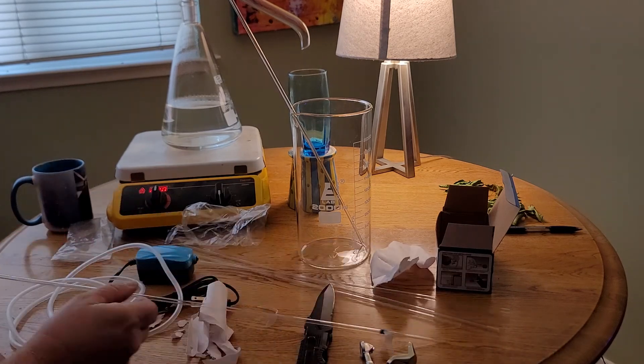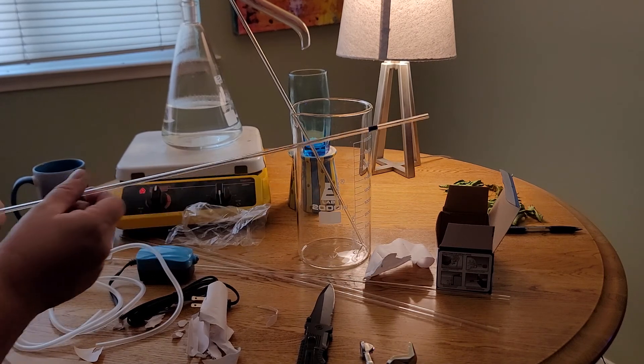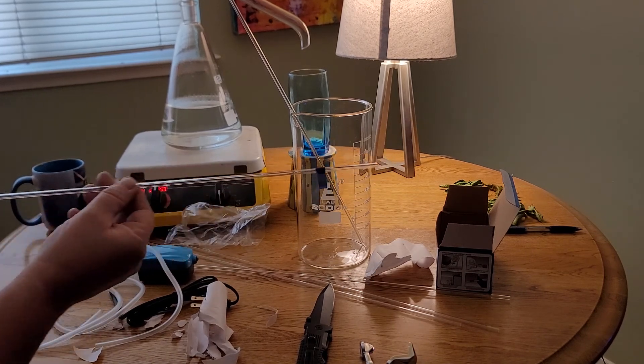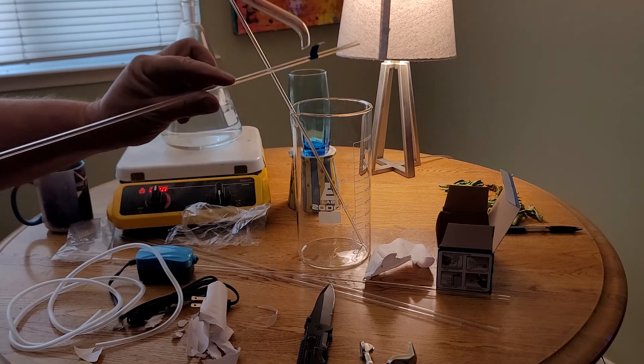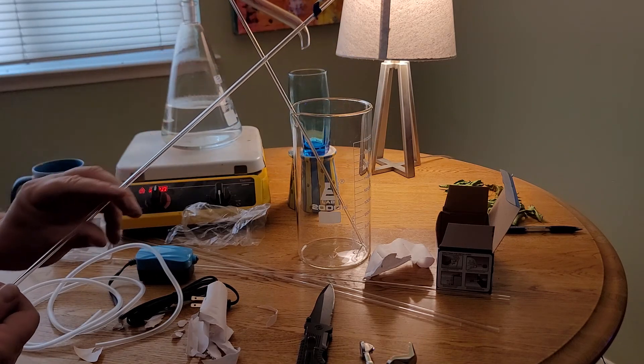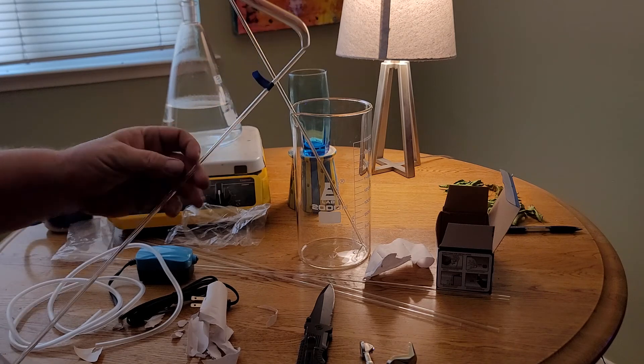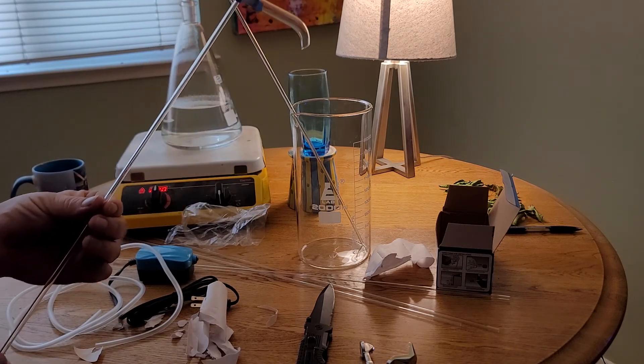In the Golden Book of Chemistry Experiments, it shows holding the tubing a little bit above a flame, not directly in the flame, but slightly above it, and then bending it. I'm going to try that at a later date and make a video with it and see how it goes.